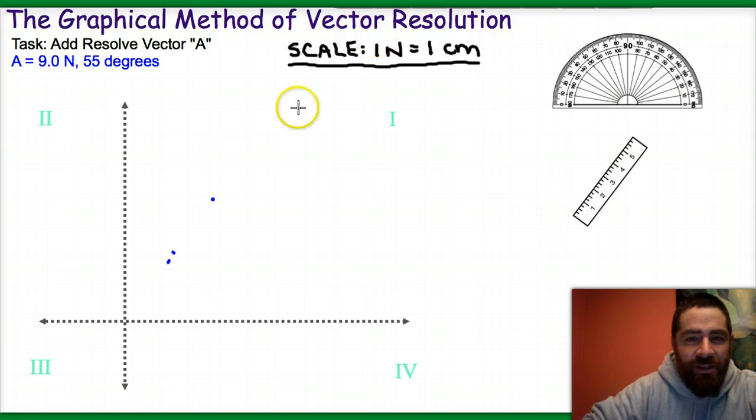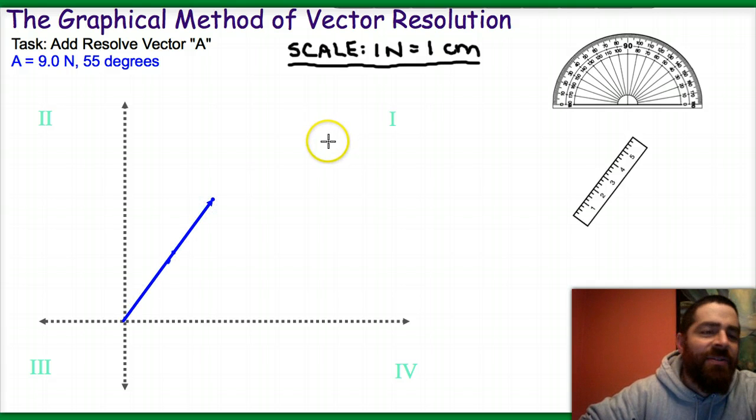And so now I'm going to basically draw my vector ray starting at the origin all the way up to that point. I know that I'm at 55 degrees, and I know that I'm 9 centimeters long.